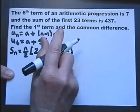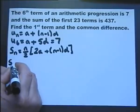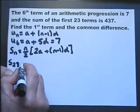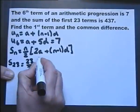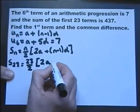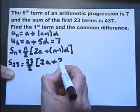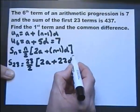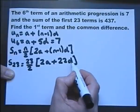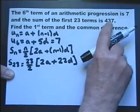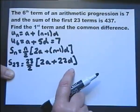We know that the sum of the first 23 terms means n is 23. So the sum equals 23 over 2, multiplied by (2A plus (23 minus 1)D), which is 2A plus 22D. And we know that the sum of the first 23 terms is 437.